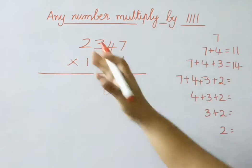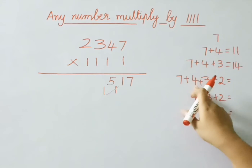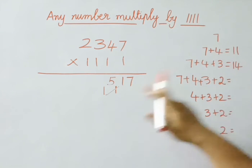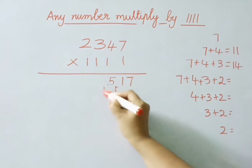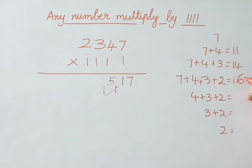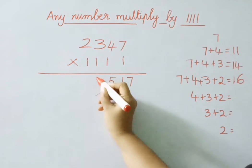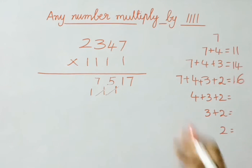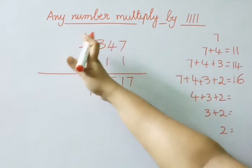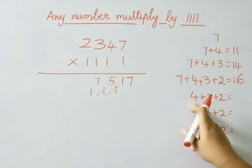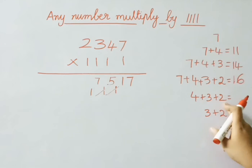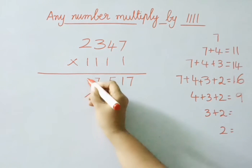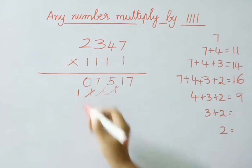Next add from right to left 4 digits: 7 plus 4 is 11, 11 plus 3 is 14, 14 plus 2 is 16, 16 plus carry 1 is 17. So write 7, carry 1. Now leave 1 digit and add the last 3 digits: 4 plus 3 is 7, 7 plus 2 is 9, 9 plus carry 1 is 10. So write 0, carry 1.